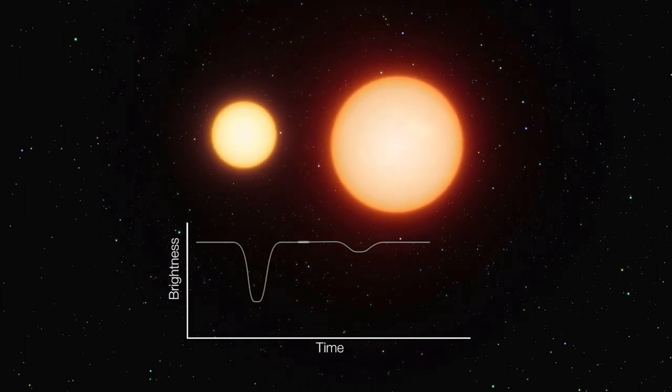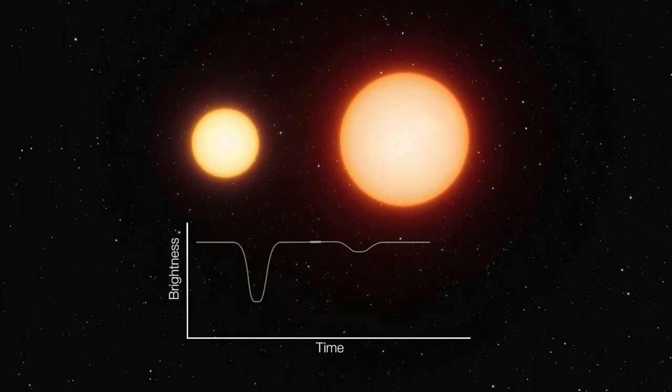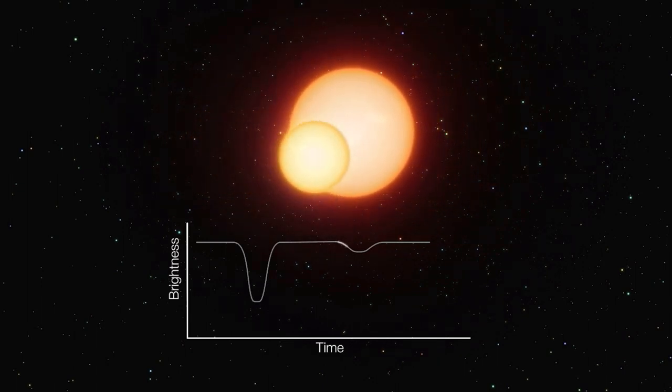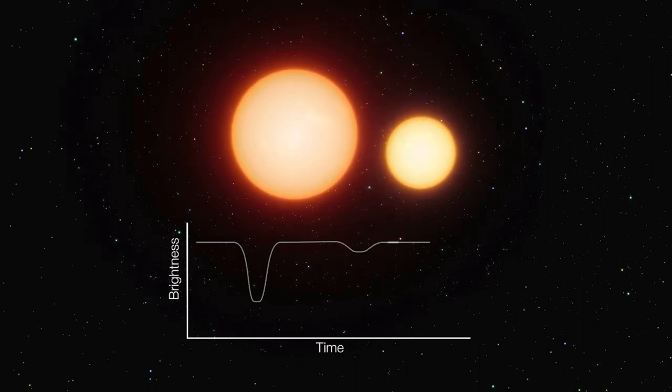They can even be false positives. Sometimes a dip in brightness is caused by something else, such as one star passing in front of another in a binary system.